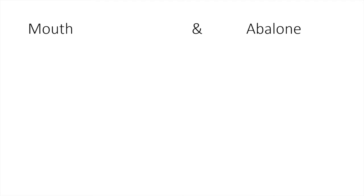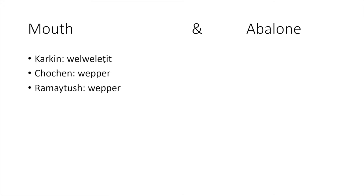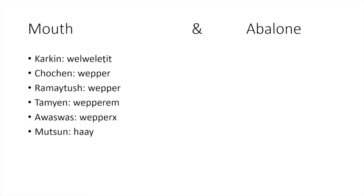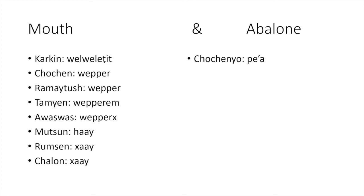Let's look at the word for 'mouth.' Sometimes a word just depends on where a language sits in the branch. Karkin is 'welweletchit,' Chochenyo is 'wepper,' Ramaytush is 'wepper' as well, Tamien is 'wepperm,' Awaswas is 'wepperh,' Mutsun is 'hay,' Rumsen is 'chay,' and Chalon is also 'chay.' So the word for 'mouth' splits cleanly by branch: Karkin has its own form, Northern Ohlone clusters together, and Southern Ohlone plus Chalon share a completely unrelated word.